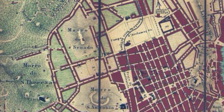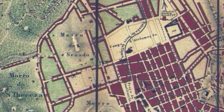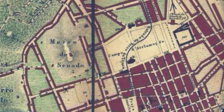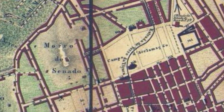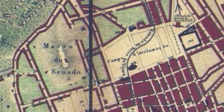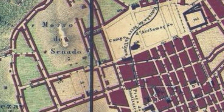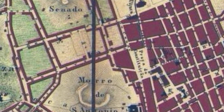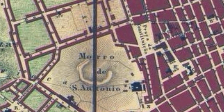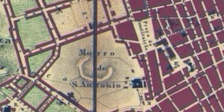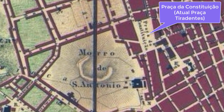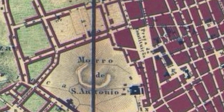Observe now, in this amplification, we see the Morro do Senado quite clearly. We also see the Campo da Aclamação — at this time, the Campo of Santana was known by the name of Campo da Aclamação. We also see the Praça da Constituição, which would become Praça Tiradentes, previously also known as Largo do Rossio, and the Morro of Santo Antônio.